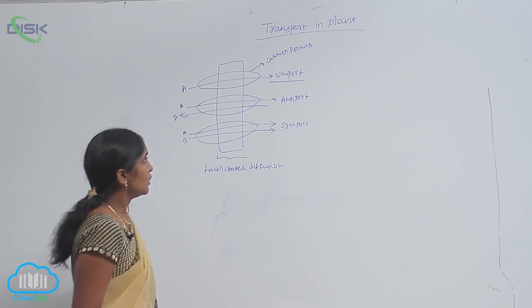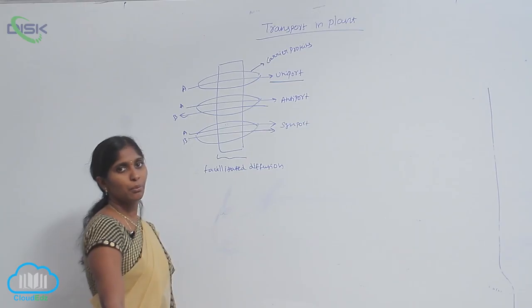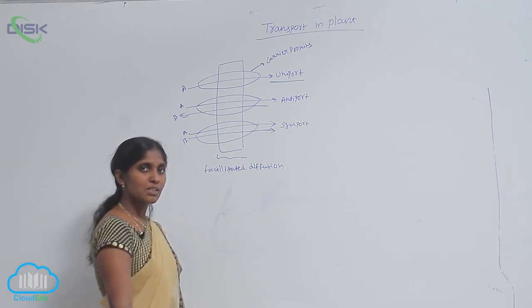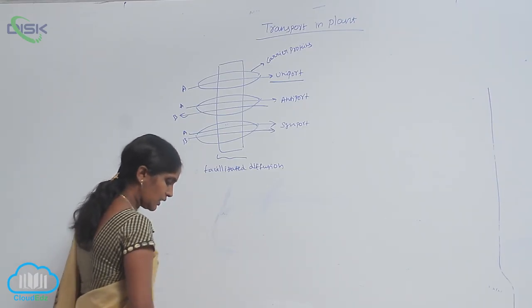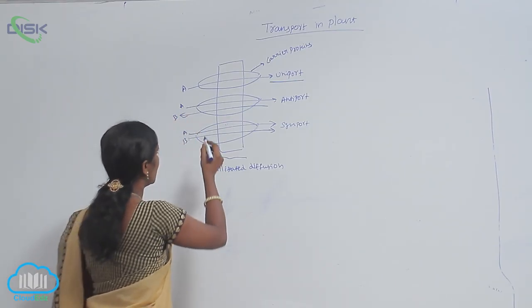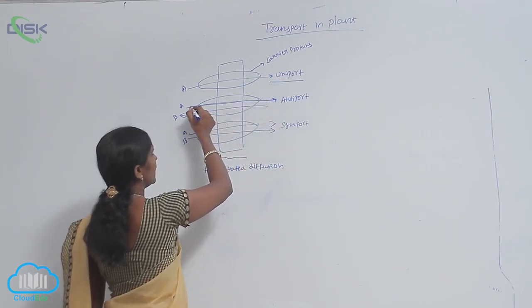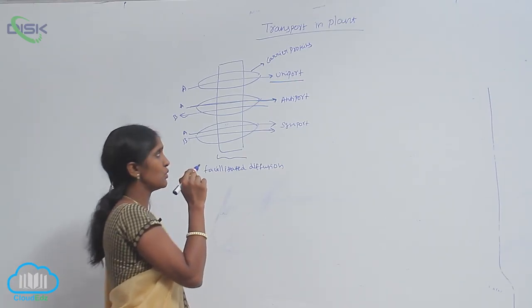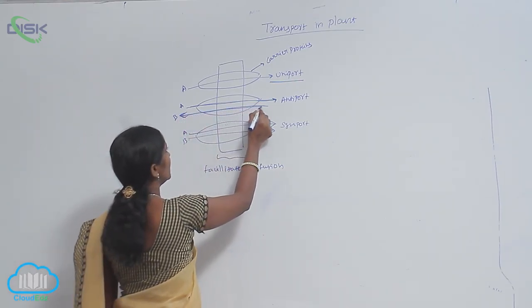Like here, two molecules are allowed by carrier protein, but the two substances are in two different directions. You see here, in the case of two, here A and B molecules are present, but A and B molecules are being transported by carrier protein through the facilitated diffusion, but both are transported in two different directions.